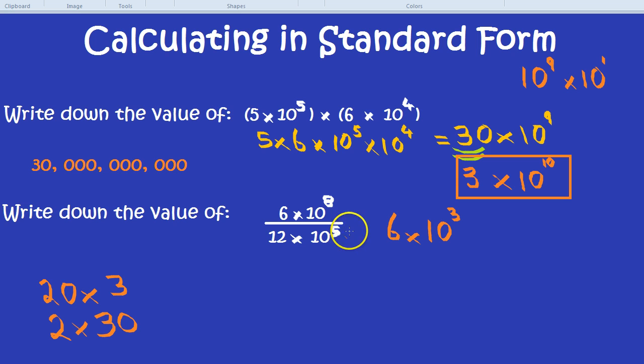Notice we've divided by 10 to the power of 5, top and bottom. And 10 to the power of 8, divided by 10 to the power of 5. When you divide, you minus the powers. So that becomes 10 to the power of 3, 8 minus 5. The bottom line only has a 12 now because we've divided top and bottom by 10 to the power of 5.